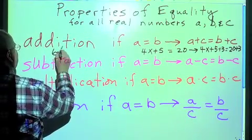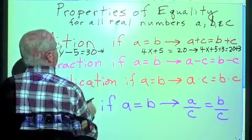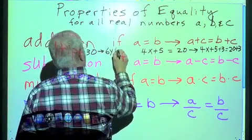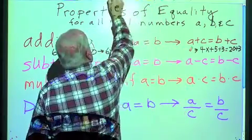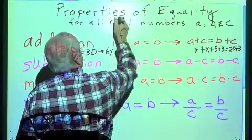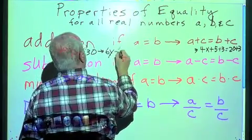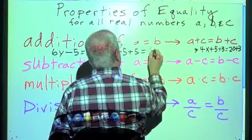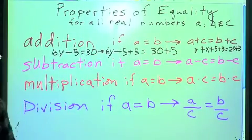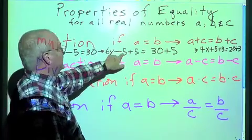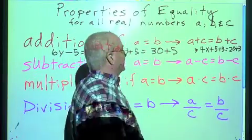I'm going to put those in black. If I have 4X plus 5 equals 20, then I can say 4X plus 5 plus 3 equals 20 plus 3. That's all it says. Maybe a more useful one would be 6Y minus 5 equals 30. Then we can say 6Y minus 5 plus 5 equals 30 plus 5. So all we've done here is we've taken this side of the equation and said, oh, it's 6Y minus 5. We can simply add a 5 to that side. If we add it to this side, we can also add it to this side.